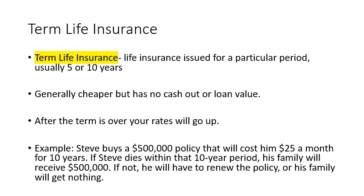Term life insurance is a little bit different. This is life insurance issued for a particular period of time — generally five or ten years. It is generally cheaper, but it doesn't have that cash-out or loan value, meaning you can't borrow against it. Once you pay in, that money is gone — there's no getting it back.